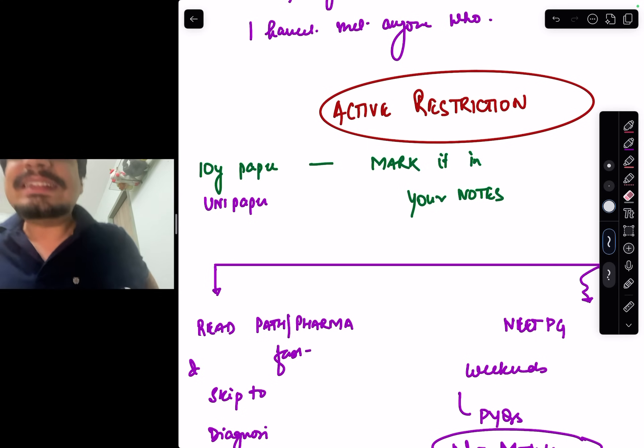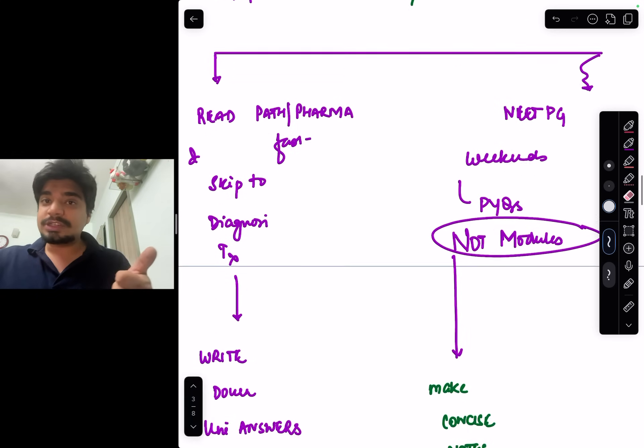Even in those topics, you have already done path pharma. This is the reason I kept on saying you have already done path pharma in third year. Revise using First Aid. You can directly skip to medical diagnosis and treatment guidelines. Another very controversial thing I would say...